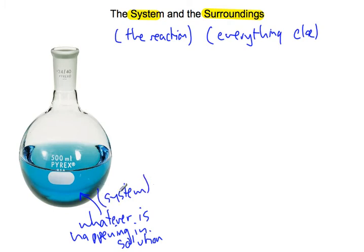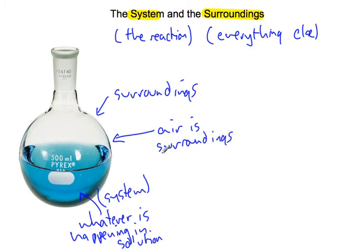And so what are the surroundings? Well, the glass, round bottom flask is part of the surroundings. The air is part of the surroundings. Pretty well everything else is going to be part of the surroundings. And so certainly if this ends up being an exothermic process, you would feel the glass getting warmer. You might feel some heat coming out of the top of the flask, that sort of thing. So that is all part of the surroundings. And that heat is being transferred from the system to the surroundings.